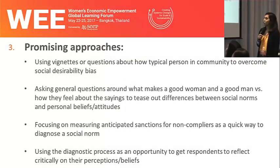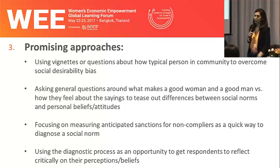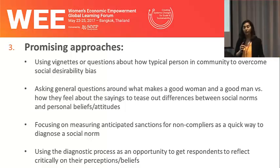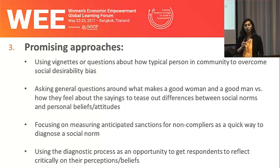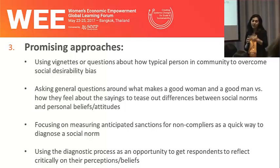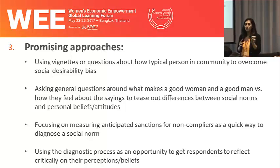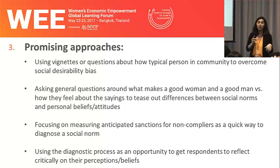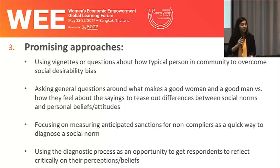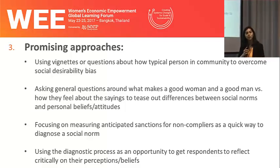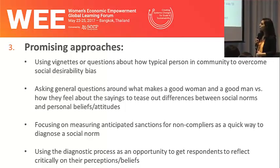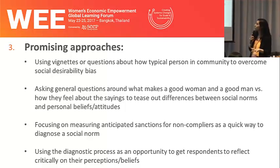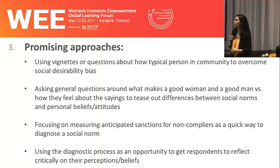Some of the promising approaches from within the Practitioner Learning Group as well as social norms research more broadly include, firstly, the use of vignettes. These are hypothetical scenarios or short stories featuring an imaginary but relatable character, with questions that pertain to that character — such as: What would he or she do in this situation? If they didn't behave in this way, what would the consequences be? Asking questions about how a typical person in the community behaves can be a good way of overcoming social desirability bias and providing a safe, impersonal avenue to explore respondents' personal beliefs and attitudes. Asking general questions around what makes a good woman versus a good man, and how they feel about the same, can help tease out differences between social norms and personal beliefs and attitudes.